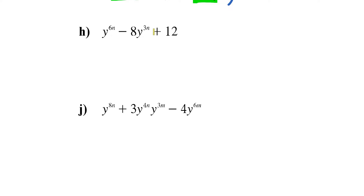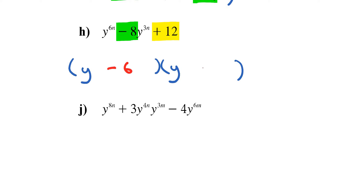Letter H is a trinomial with three terms. I need two numbers that multiply to 12 and combine to negative 8: that's negative 6 and negative 2, since two negatives multiply to give a positive, and negative 6 minus 2 is negative 8. I also have x to the 6n, and since 6n equals 3n plus 3n, I need a 3n in each bracket.